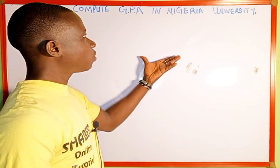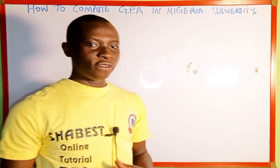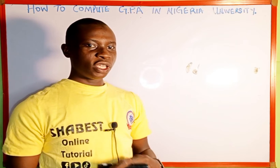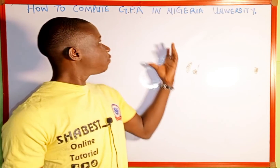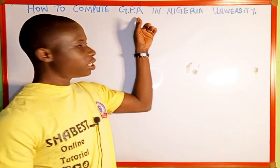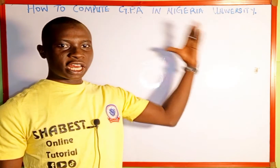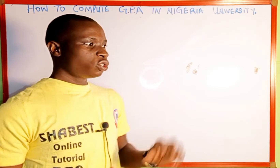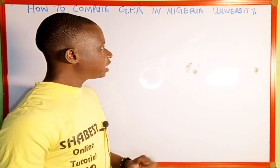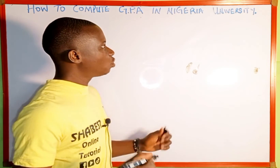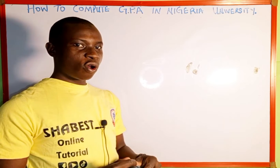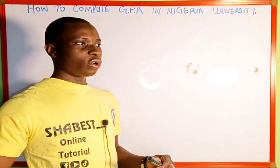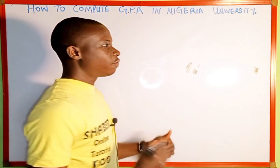To calculate GPA in Nigeria University, the first thing we need to know is that Grade Point Average in Nigeria University is on a five-point scale. The next things we need to know are the percentage score, the letter grade, and the grade point.